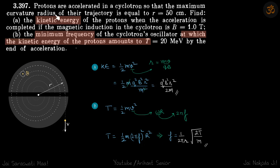We are given the maximum curvature radius is R of the cyclotron. So it's going out when the radius is R. We need to find the kinetic energy of the proton.